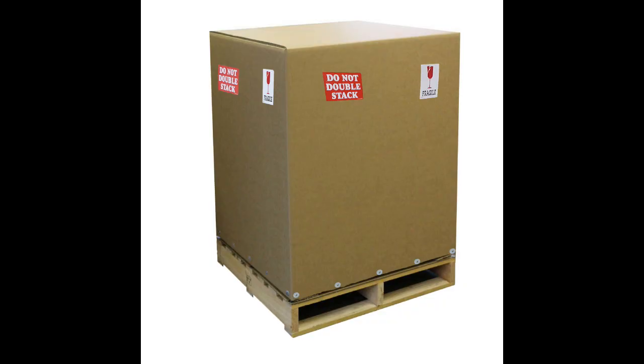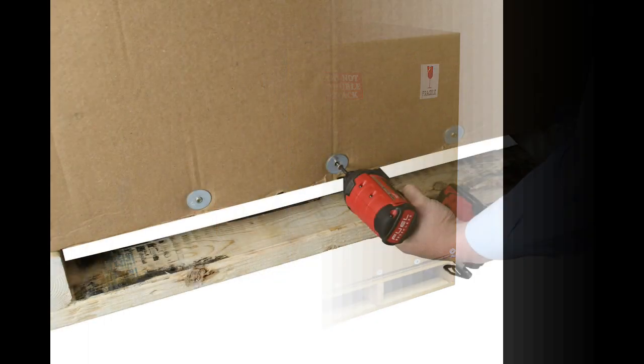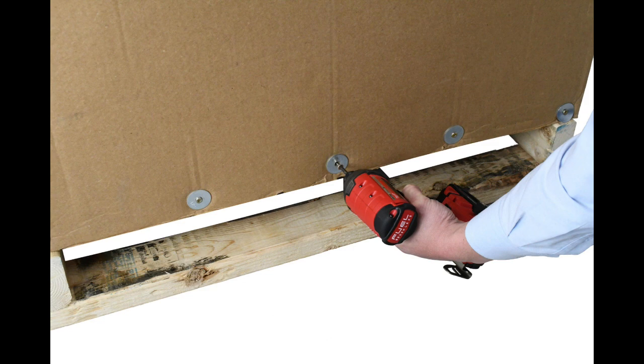To unpack the bottomless conveyor, detach the box from the pallet using the T25 Torx bit that can be found in the packing slip. Use the Torx bit with a screwdriver to remove the screws and washers from the bottom of the box, before carefully lifting the box off of the conveyor.